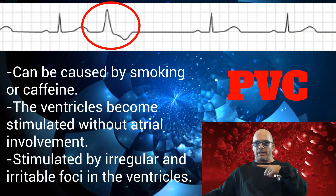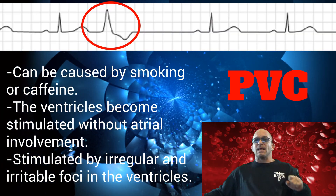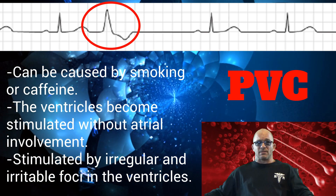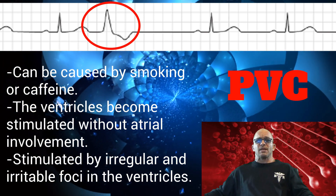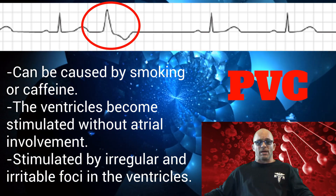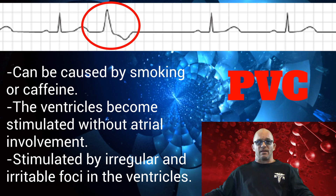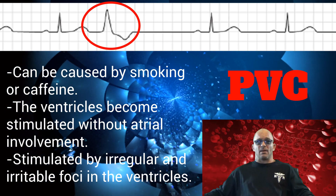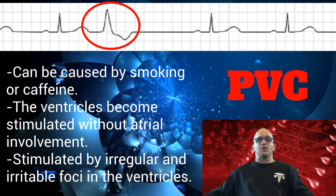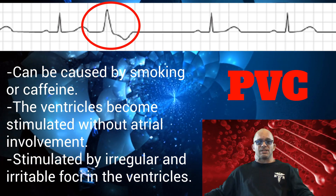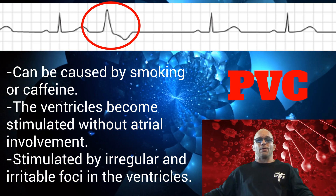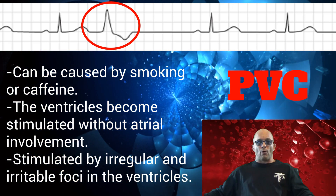Our next abnormality is the premature ventricular contraction, which can be elicited by smoking or caffeine. The ventricles become stimulated without atrial involvement. They are stimulated by irregular and irritable foci.